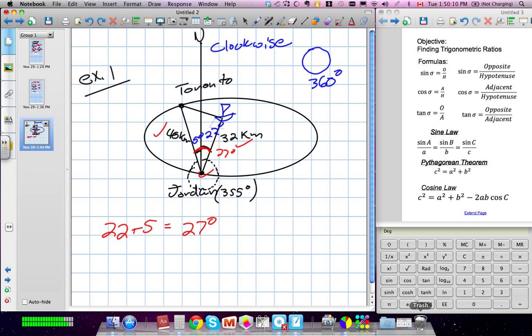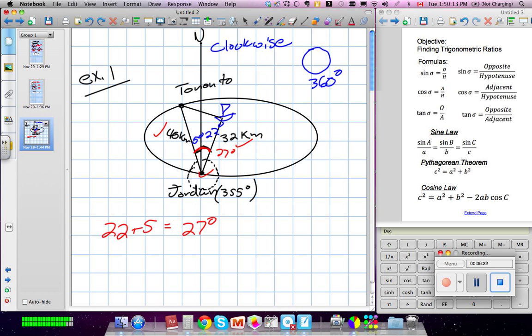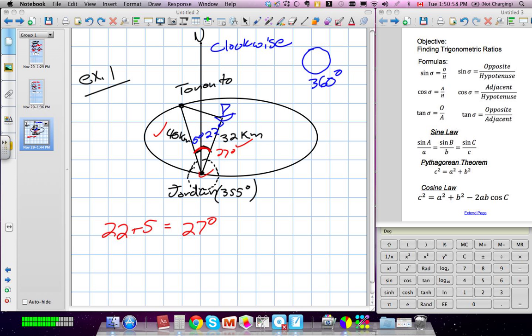In order to use sine law, I need to have an opposite angle and side. I only have one angle. Do I have the opposite side? No. In fact, that's exactly what I'm looking for. So can I use sine? No. So what do I use? Cosine. We're going to be using our cosine law here.